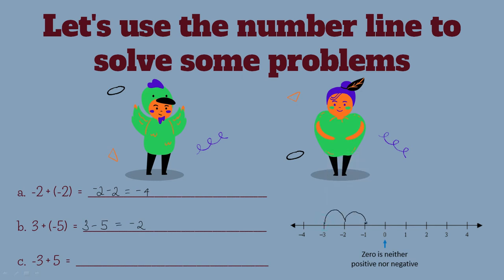We count one, two, three, four, five. Your answer will be two.